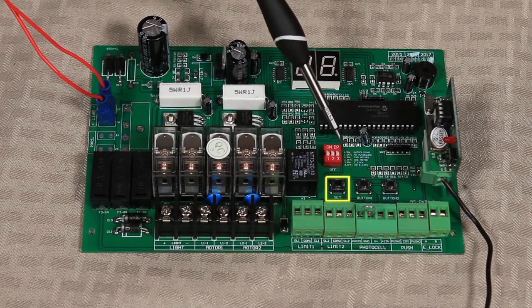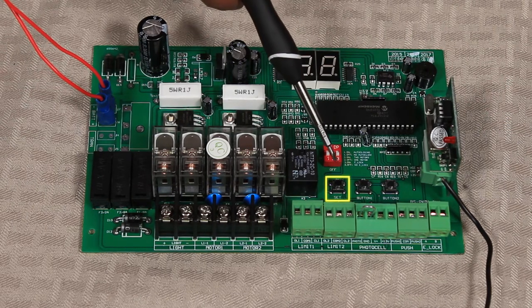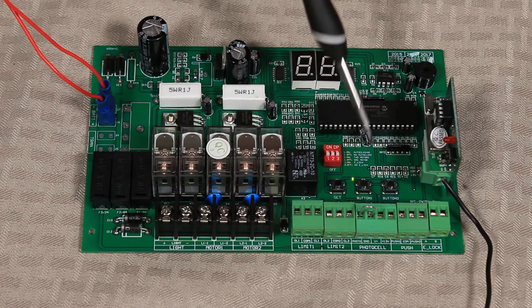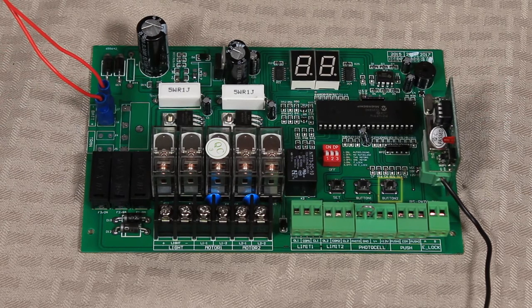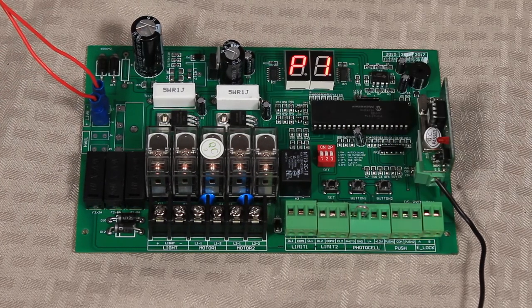First, I'm going to explain the buttons here. Set allows you to go into the parameters, P1 through P6. Button 1 allows you to increase the parameter. Button 2 allows you to decrease the parameter. So I'm going to press Set here and bring you to P1.